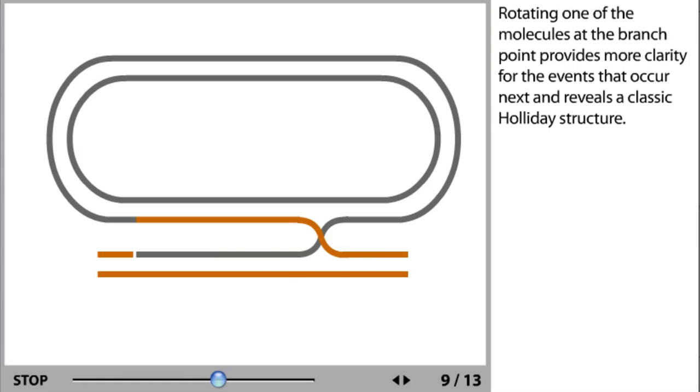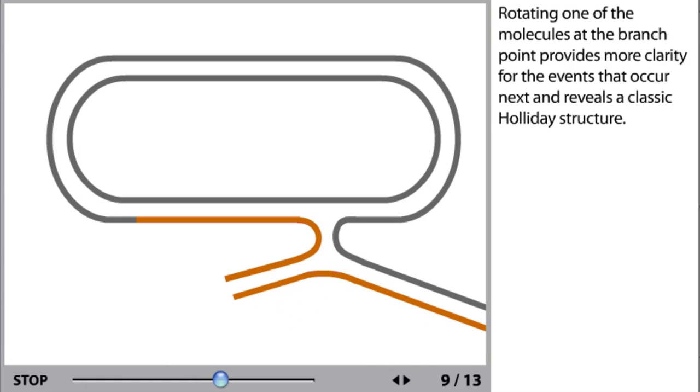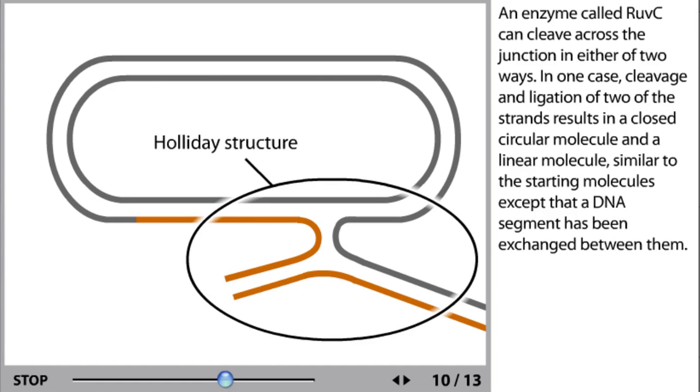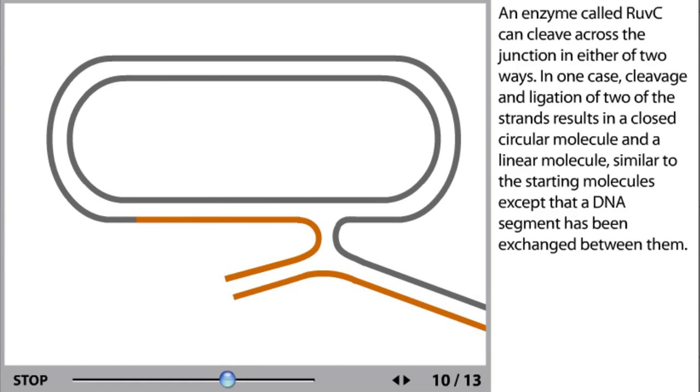Rotating one of the molecules at the branch point provides more clarity for the events that occur next and reveals a classic Holliday structure. An enzyme called RuvC can cleave across the junction in either of two ways.